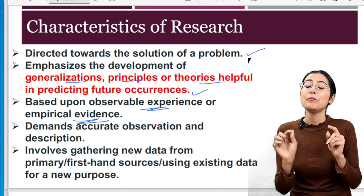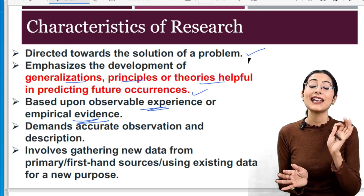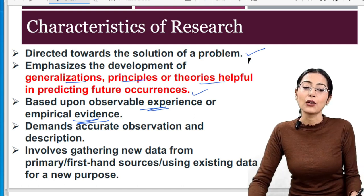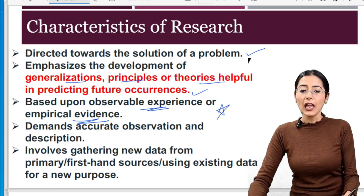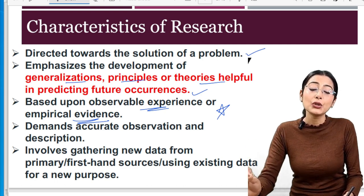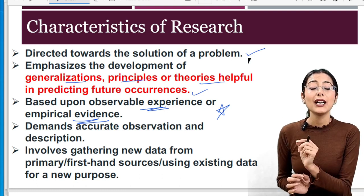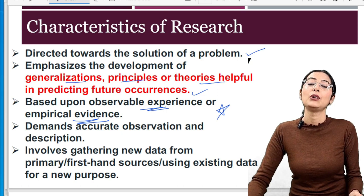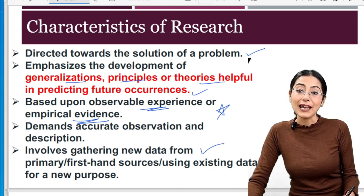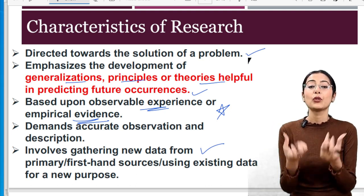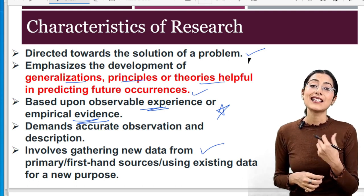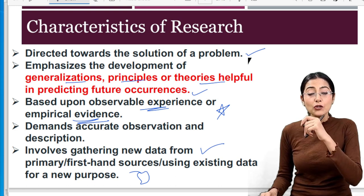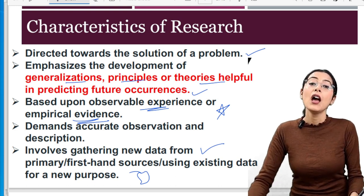Research is based upon observable experience and empirical evidence — all evidence that is scientific and verifiable. If you have to testify empirically, you will get the answer. Scientific research demands accurate observation and description. If you judge a substance, you need to know its properties accurately — only then can you predict or testify something. Research involves gathering new data from primary, first-hand sources or using existing data for a new purpose. True scientific research requires first-hand investigation.